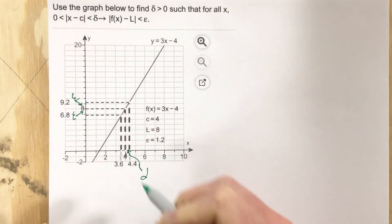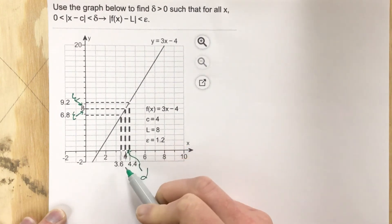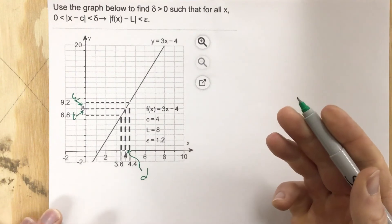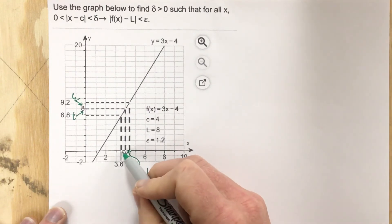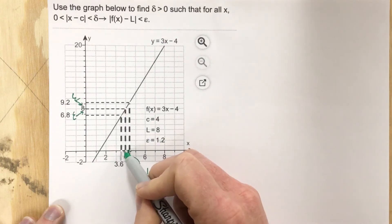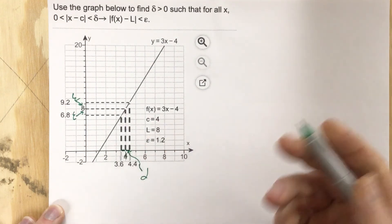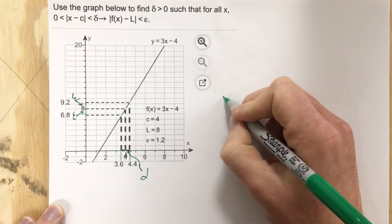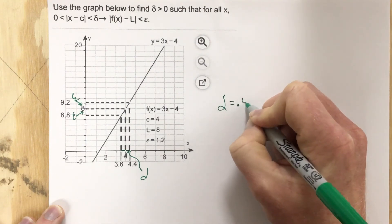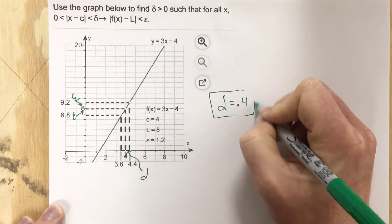Our goal is to find the gap between - this is c and 4.4 and 3.6. It looks like they're going to be the same. They're both 0.4 away. Just looking at the graph, this is 0.4, this is 0.4. So our delta value is 0.4. That's the solution.